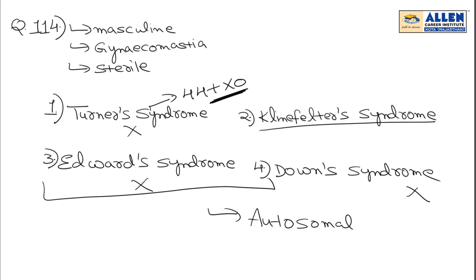What's left? Klinefelter's syndrome. Let's check it. Klinefelter's syndrome has the karyotype 44 + XXY. This means Y is present, so the person will be male — masculine. But alongside the Y, there are 2 X chromosomes. Because of those 2 X chromosomes, the Y cannot properly express itself. Remember, Y contains the testis-determining factor, so the person is male, but testis development will not occur properly. Gametes will not be formed. So the person becomes sterile.